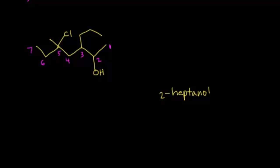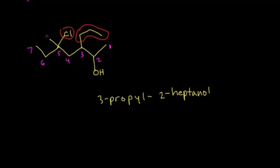Looking at the other substituents: at carbon 3 there is a 3-carbon alkyl group, so that's propyl — we write 3-propyl. At carbon 5 we have two substituents: a chloro group and a methyl group. Following alphabetical order, C comes before M, so we write 5-chloro and 5-methyl. The full name is 5-chloro-5-methyl-3-propyl-2-heptanol.